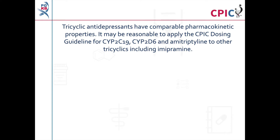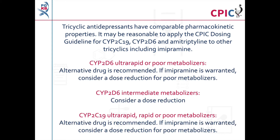Because tricyclic antidepressants have comparable pharmacokinetic properties, it may be reasonable to apply the CPIC dosing guideline for CYP2D6, CYP2C19, and amitriptyline to other tricyclic antidepressants including imipramine. The guideline recommends an alternative drug for patients who are CYP2D6 ultra-rapid or poor metabolizers, or patients who are CYP2C19 ultra-rapid, rapid, or poor metabolizers. If imipramine is warranted, a dose reduction can be considered for CYP2D6 poor metabolizers, CYP2C19 poor metabolizers, or CYP2D6 intermediate metabolizers.